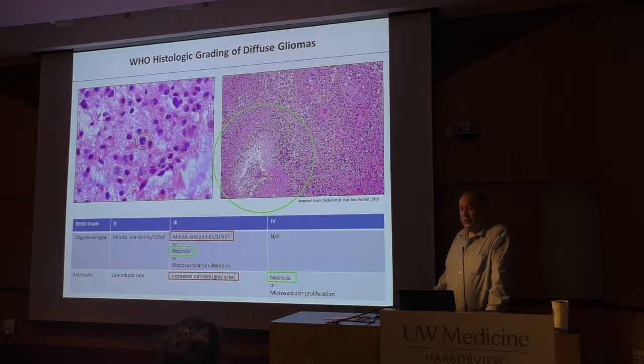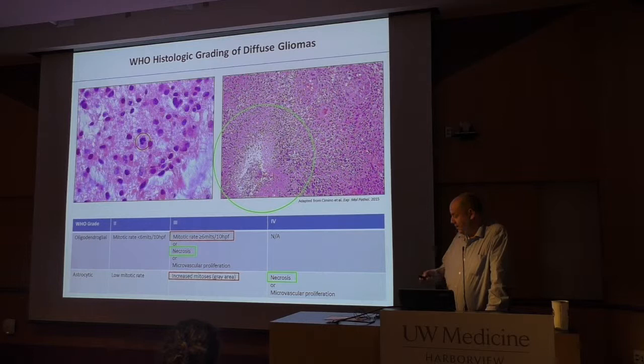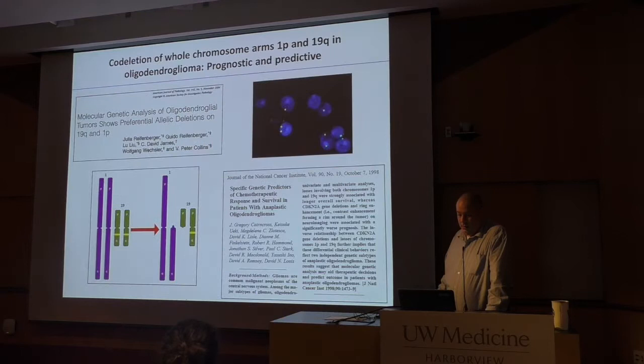For higher grade astrocytomas, if you see necrosis it's a glioblastoma. Nomenclature is a little odd — we go from astrocytoma to glioblastoma based on grade four status, but oligodendrogliomas stay the same. Microvascular proliferation: if it's an oligodendroglioma it's grade three, if it's an astrocytoma it's grade four.